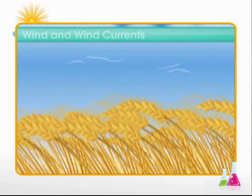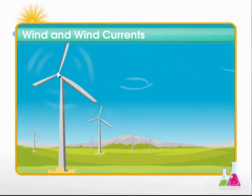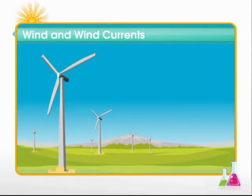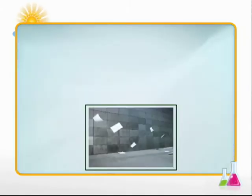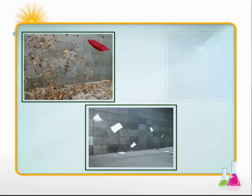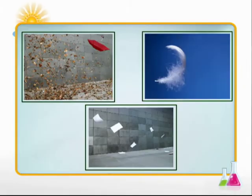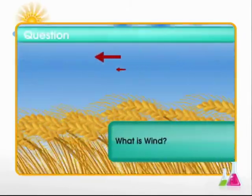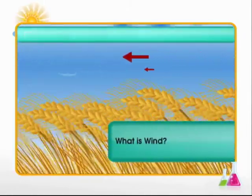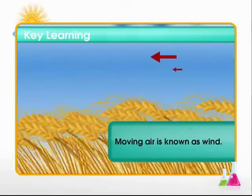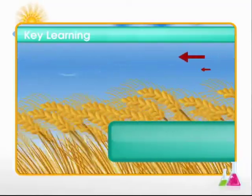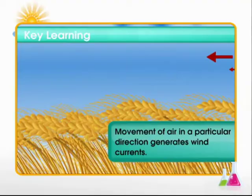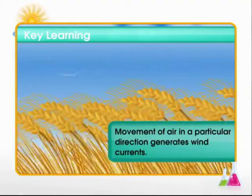Look at these plants swaying and pinwheels rotating in the presence of wind. All light objects like paper, dry leaves and feathers fly off to distances during wind. So, what is wind? Moving air is called wind. And the movement of air in a particular direction creates wind currents.